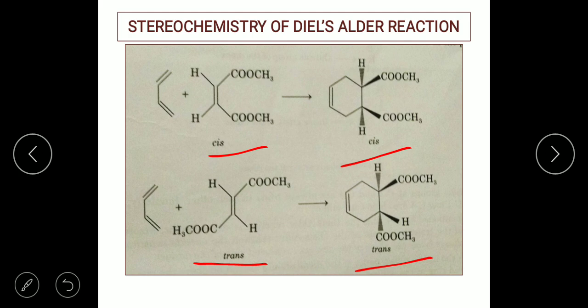Here we can take this example of how these two groups are cis to the double bond — both are above the plane. In the second example, the COCH3 is in the opposite orientation, that is they are trans to the double bond, and you can see one is in the dash and one is in the wedge. So they are highly stereospecific in nature.